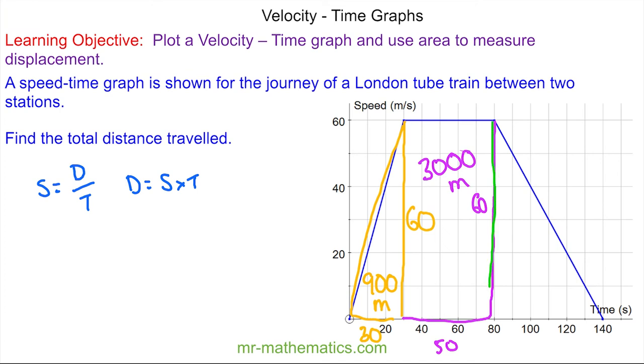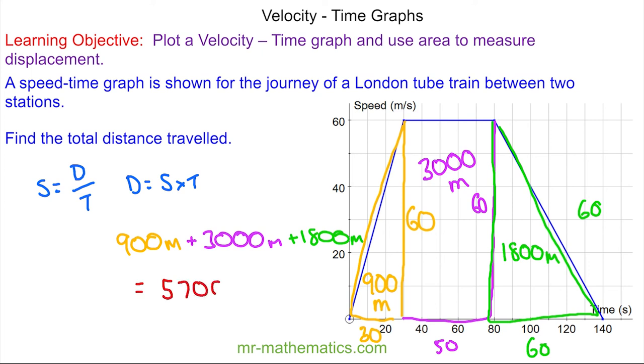And the next one we have this triangle, where we have a base of 60 and a height of 60. So this will be 1800 meters. So the total distance will be the yellow triangle 900 meters plus the rectangle 3000 meters plus the green triangle 1800 meters. So we have a total distance of 5700 meters, or 5.7 kilometers. Okay, thank you for watching and I hope you found that useful. Thanks again and take care.